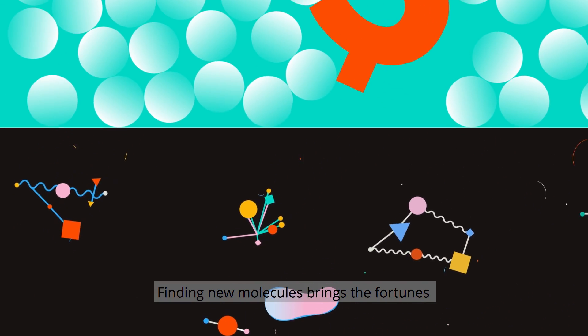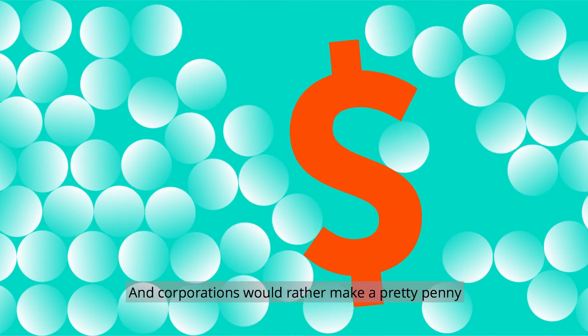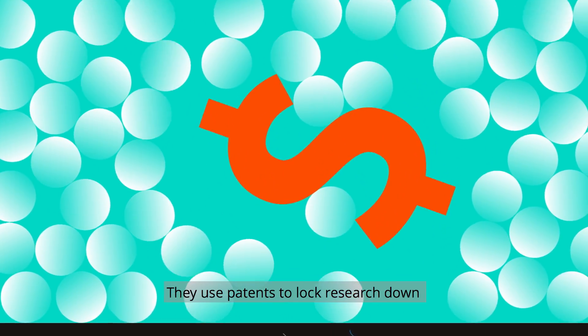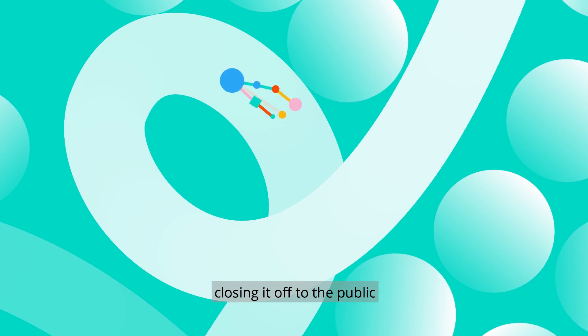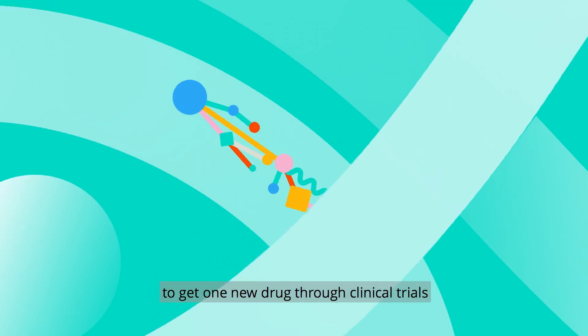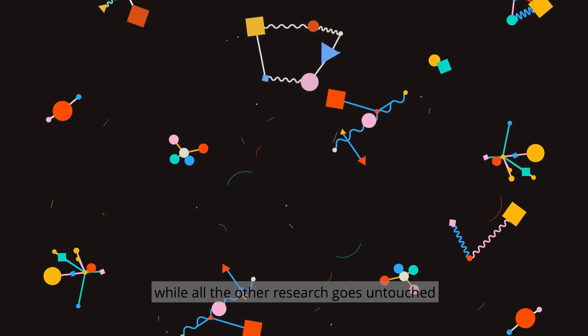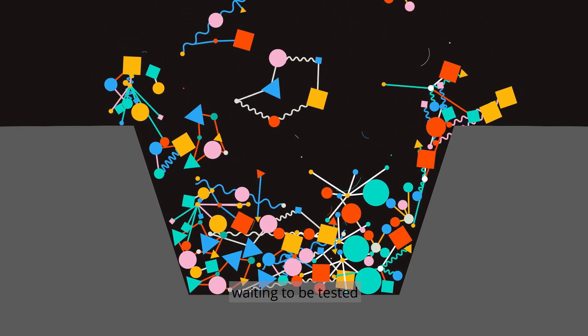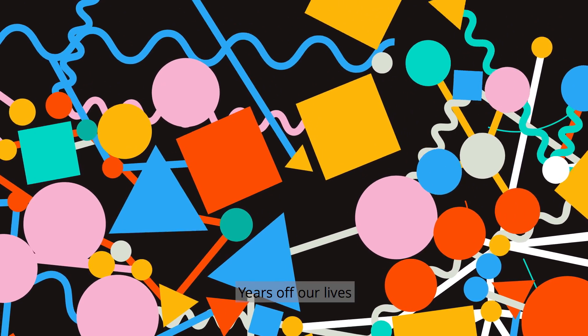Finding new molecules brings the fortunes, and corporations would rather make a pretty penny than help us live longer. They use patents to lock research down, closing it off to the public. It takes $2.6 billion to get one new drug through clinical trials, while all the other research goes untouched. There's a backlog of 20 years of drugs waiting to be tested that can't be funded. Years off our lives.